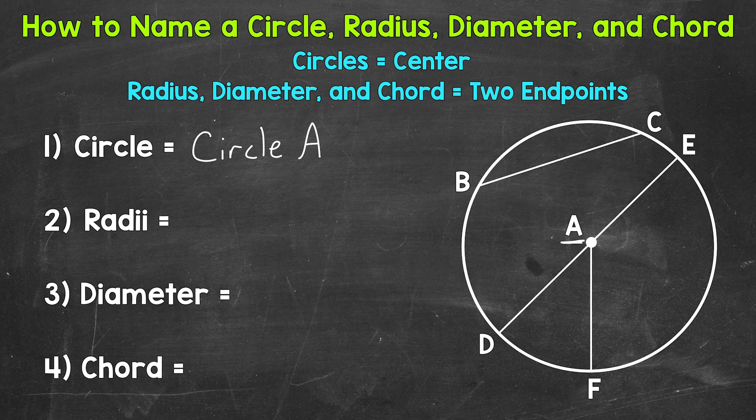Next, let's name a radius. Actually, we have more than one radius, so we will be naming radii. Radii is the plural form of radius. A radius is a line segment that connects the center of a circle to any point on the circle. So a radius is the distance from the center to any point on the circle. We name a radius by using the two endpoints of the line segment.